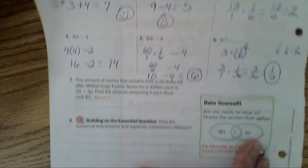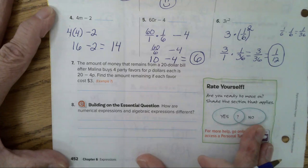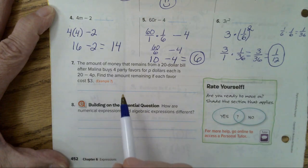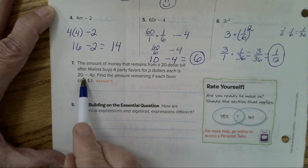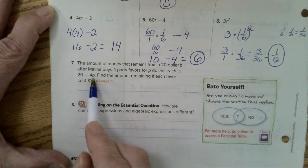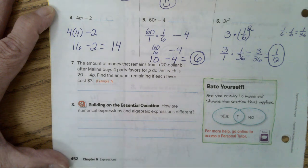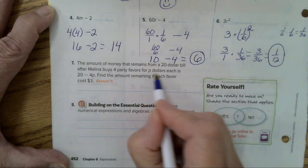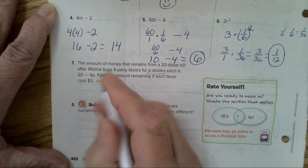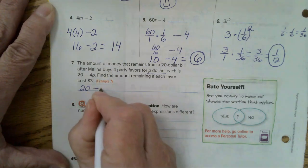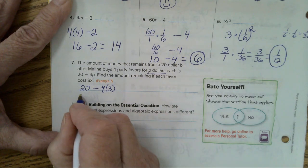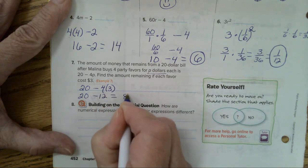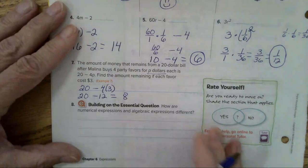Now, let's look at problem number 7. The amount of money that remains from a $20 bill after Molina buys 4 party favors for P dollars each is 20 minus 4 times P. So they've given you the expression. That's helpful. Now, find the amount remaining if each favor is 3 dollars. P stands for dollars, so you're going to replace the P with 3. So, 20 minus 4 times 3. 4 times 3 is 12. 20 minus 12 equals 8. And the answer is 8 dollars.